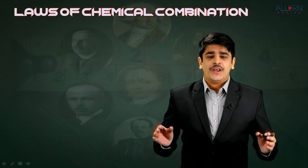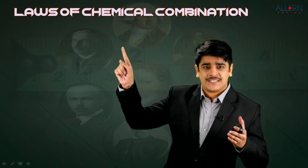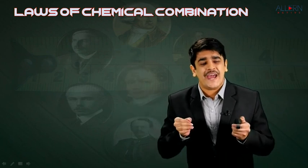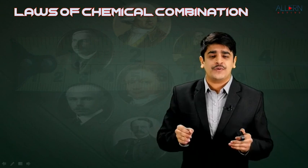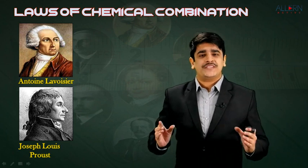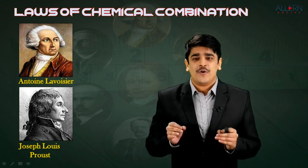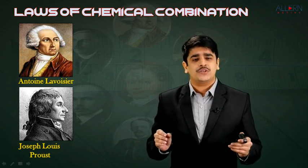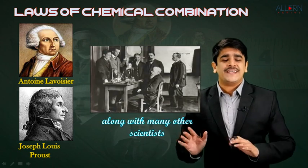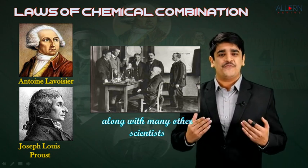Welcome back. In this module, we are going to discuss something called the laws of chemical combination. Who has helped us formulate these laws is something we should look at. We have a total of two scientists: the first by the name of Antoine Lavoisier, and the second by the name of Joseph Louis Proust. They have taken the help of several other scientists as well and have formulated the laws of chemical combination for us.